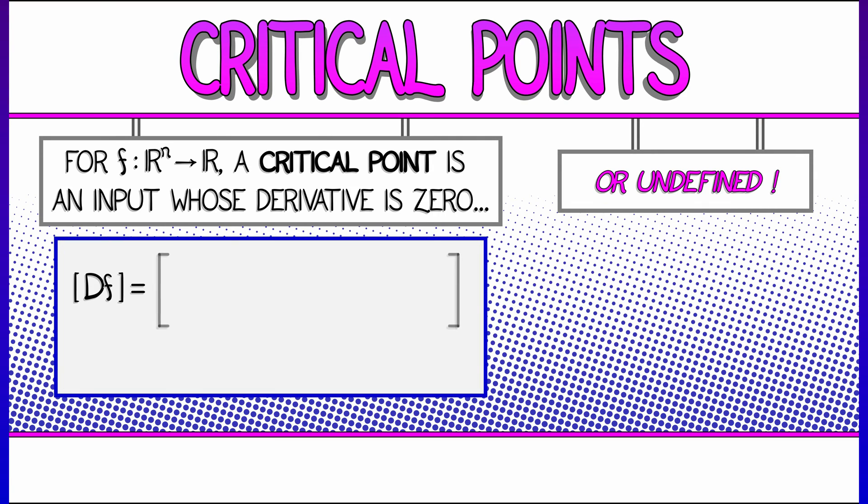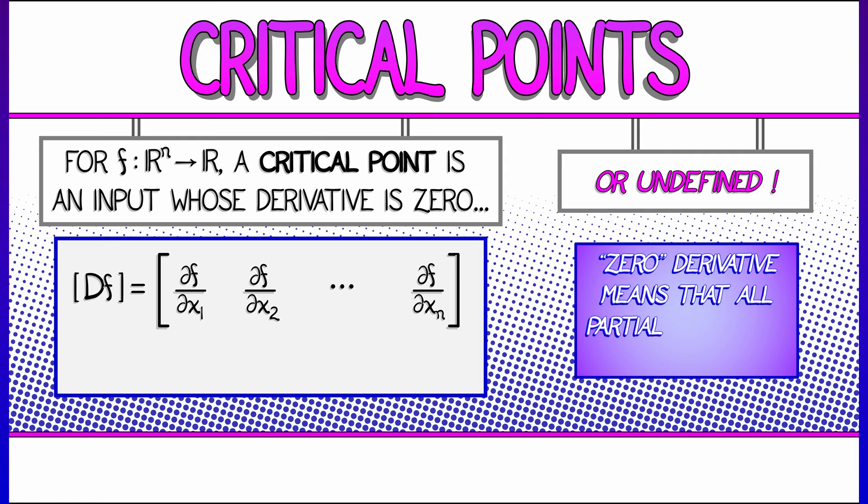Same as back in single variable calculus. But because the derivative is a matrix, a linear transformation with n entries, in order for that to be equal to zero, this means that all the partial derivatives must vanish, not merely one partial derivative. They all have to be zero.